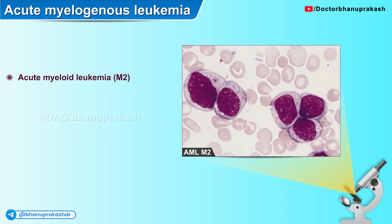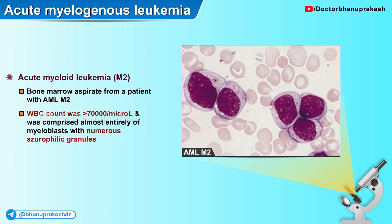Here is another important histopathological image of a bone marrow aspirate from a patient diagnosed with acute myelogenous leukemia. The white blood cell count was more than 70,000 per microliter and was comprised almost entirely of myeloblasts with numerous azurophilic granules. You can appreciate how the cytoplasm is still quite evidently available, whereas in comparison, a slide with acute lymphoblastic leukemia shows only thin cytoplasm or no cytoplasm at all, with the nucleus occupying most of the cell.